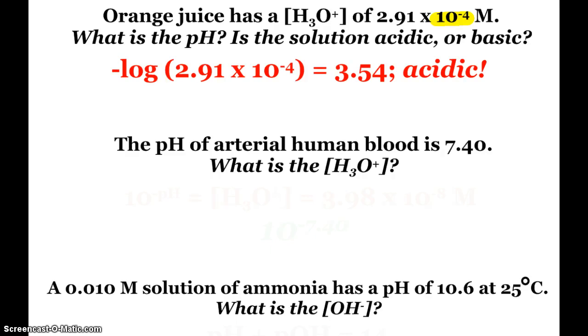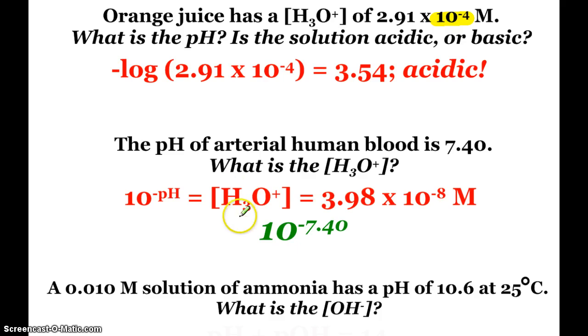7 is neutral, greater than 7 basic. So here we see the pH of arterial blood is 7.40, so just slightly basic. What's the hydronium concentration? Well, we can use the anti-log function, reverse. 10 to the negative pH, the anti-log, is my hydronium concentration. So 10 to the negative 7.40, when I solve that, is 3.98 times 10 to the negative 8th molar. Don't leave an answer like that, because you have the ability to use the calculator function to find the actual molarity.